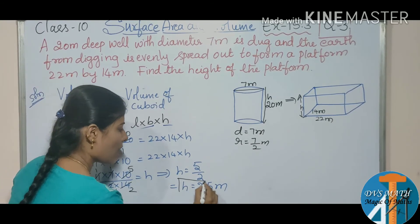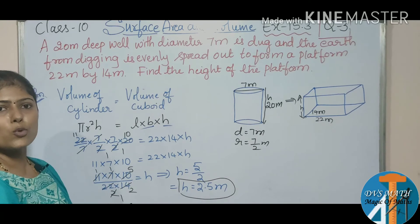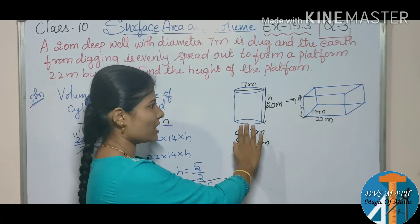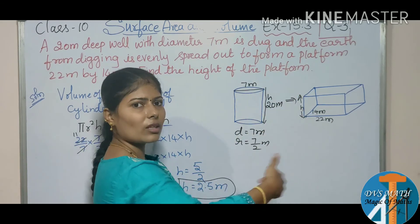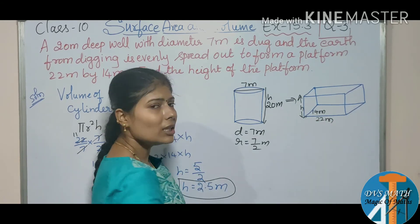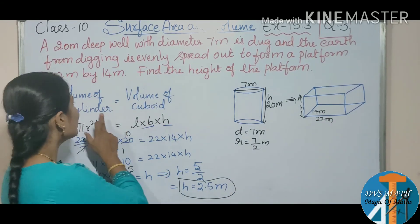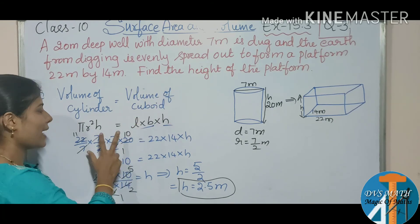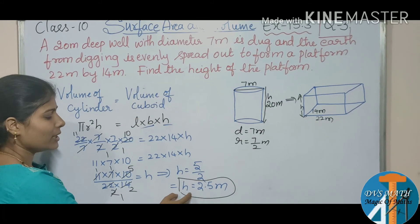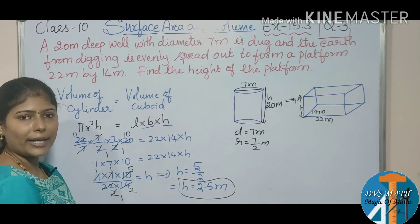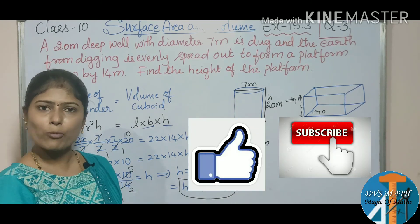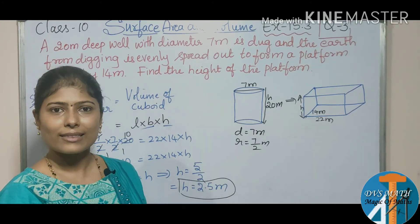So the height of the platform is 2.5 meters. When digging the well — which is in the shape of a cylinder — the earth or soil is spread in the form of a platform, which is a cuboid. We equate the volume of the cylinder to the volume of the cuboid, substitute the formula, and simplify to get h = 2.5 meters. For more exercises, keep watching our channel. Thank you.